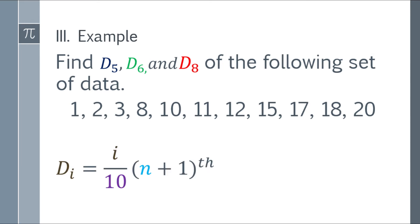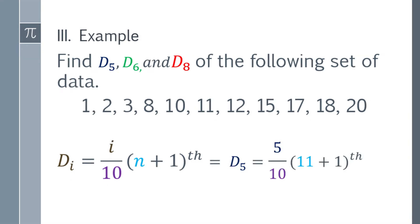Now, write the formula. And the next step, you have to substitute the values. So D sub 5 or fifth decile: the i becomes 5, and the n is 11, because we have 11 numbers.